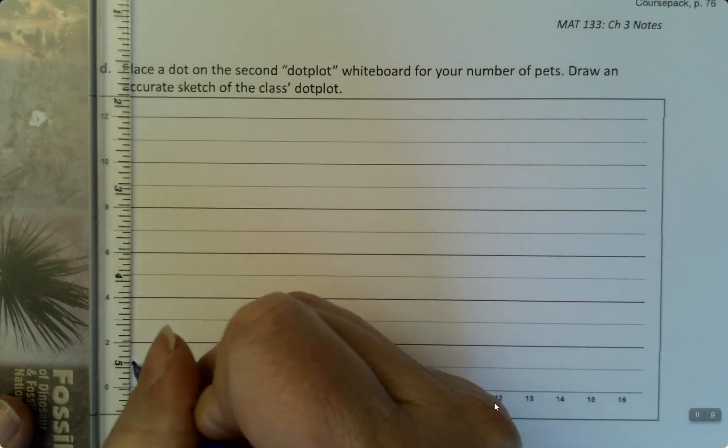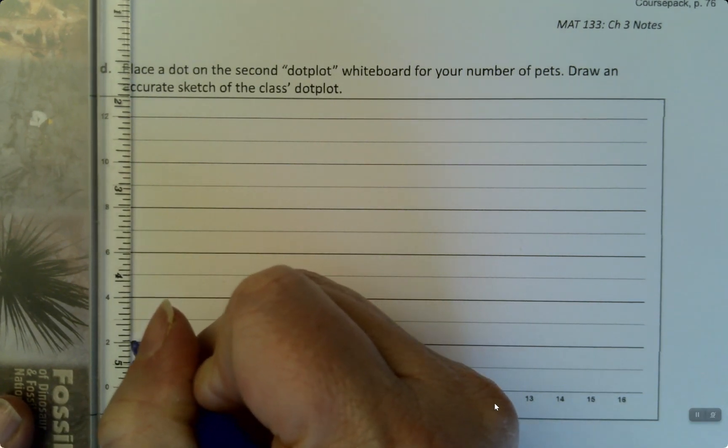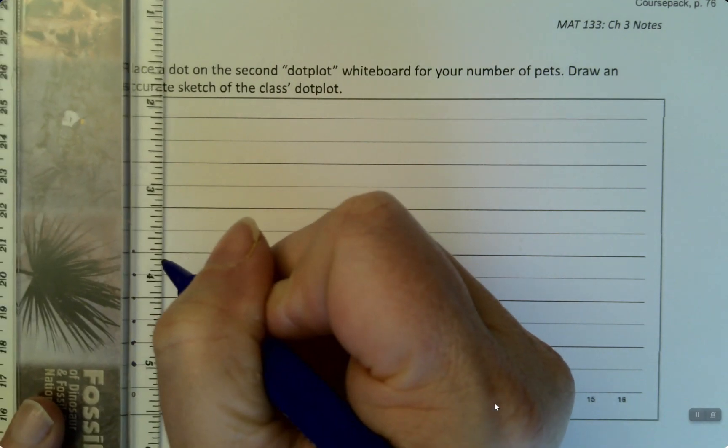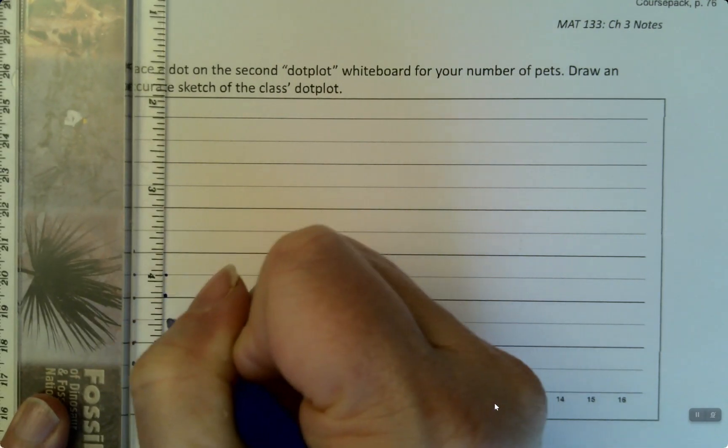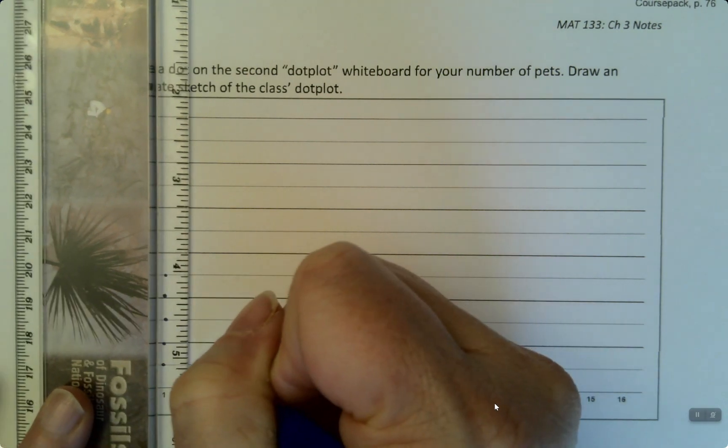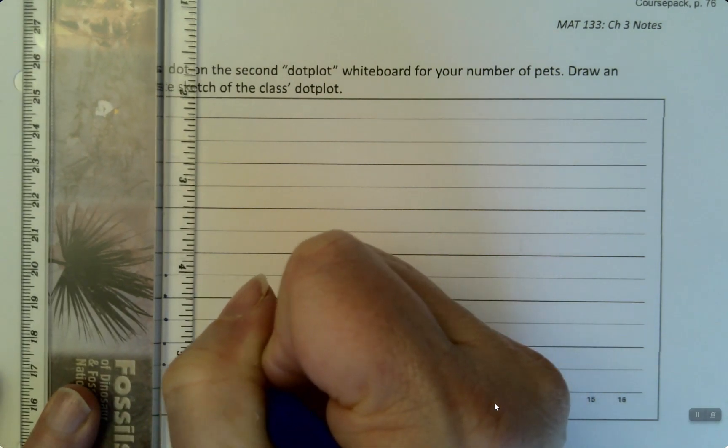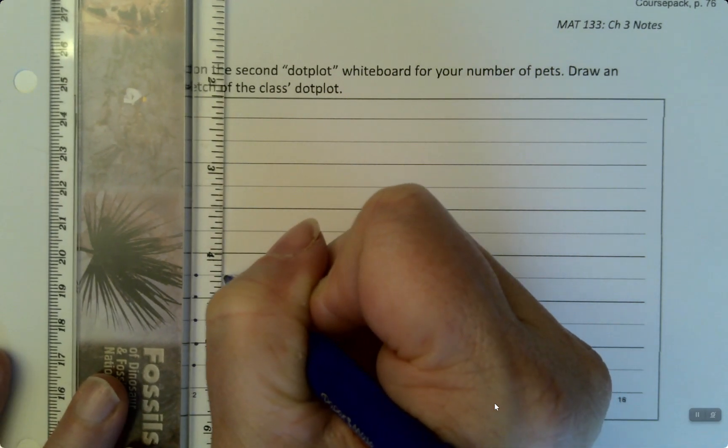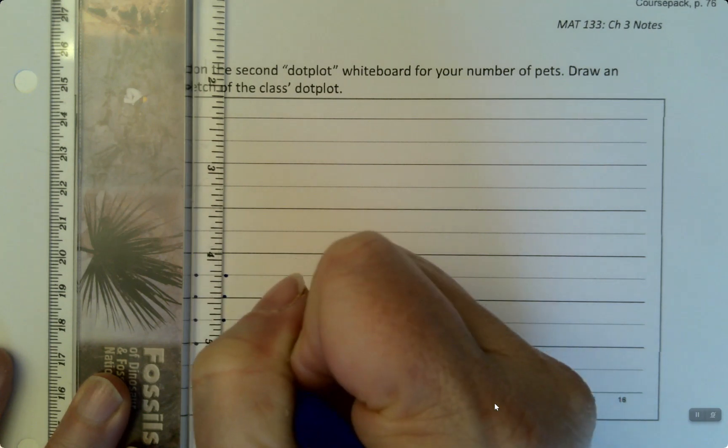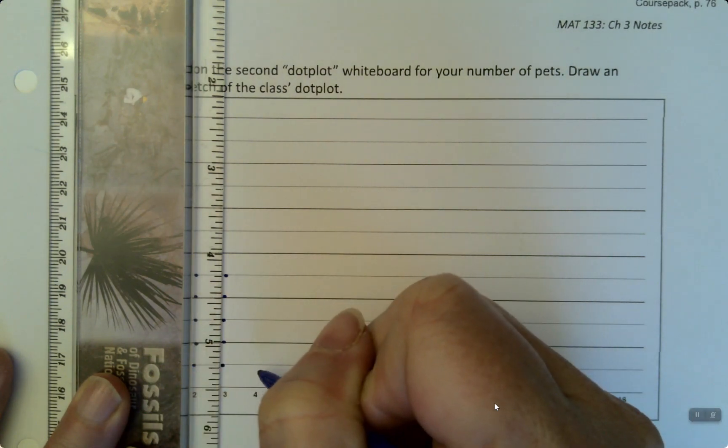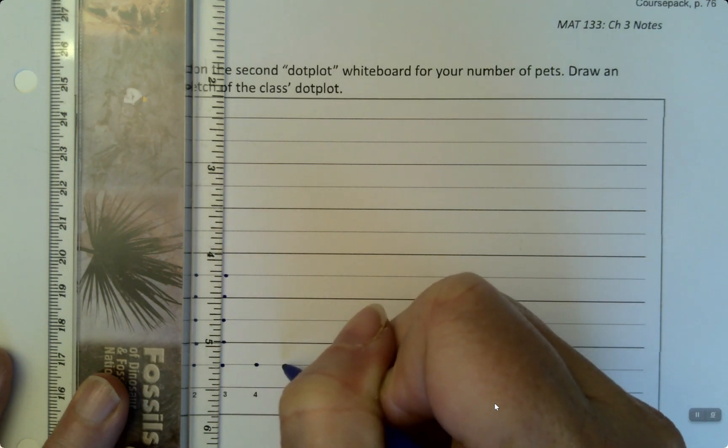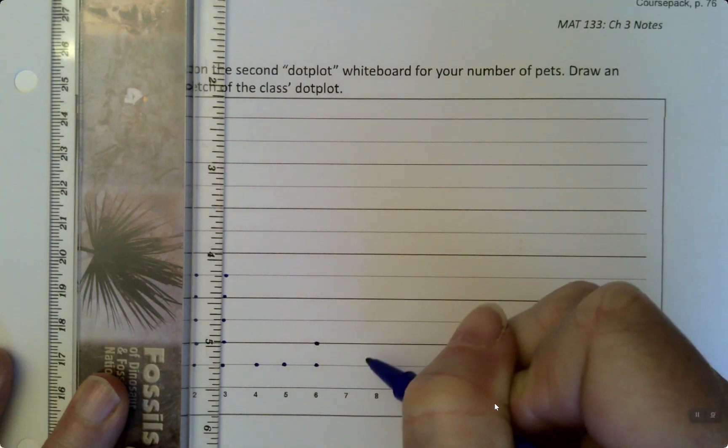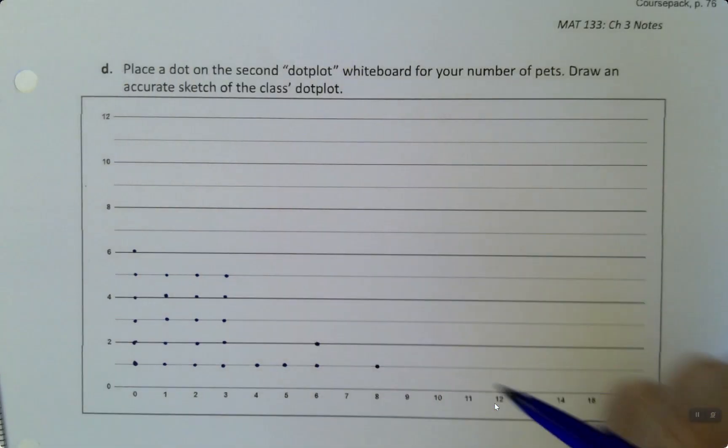I'm going to grab my ruler here. So one, two, three, four, five, six zeros. Then for one, we had one, two, three, four, five, and so on. And you have each student's dot representing themselves.